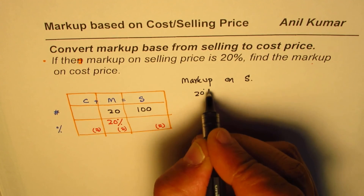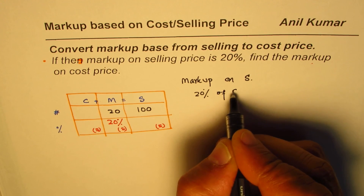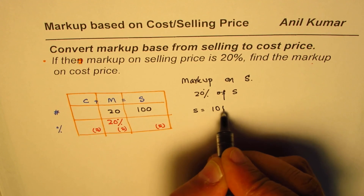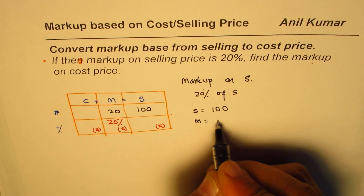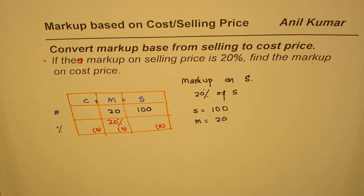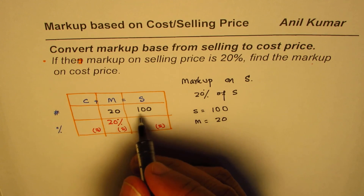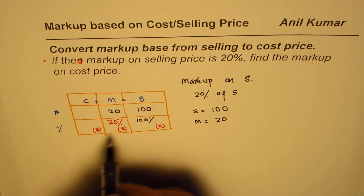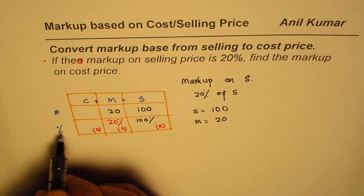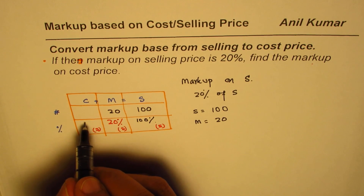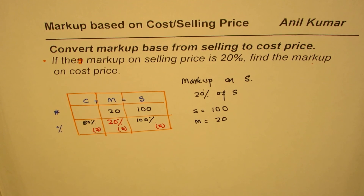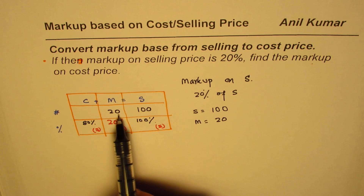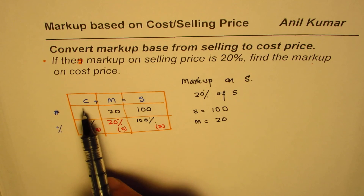Markup on sales is 20% of sales — so if sales equals $100, markup equals $20, which is 20% of 100. Since the base is sales, we take sales as 100%. Markup is 20%, and therefore cost should be 80%. We already know markup is $20 and sales is $100, so we can also find the cost directly.